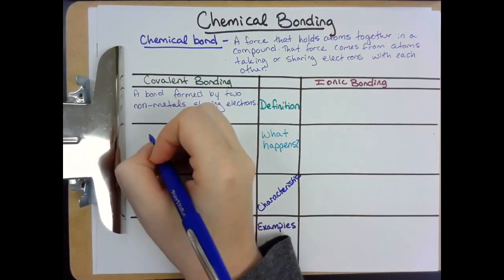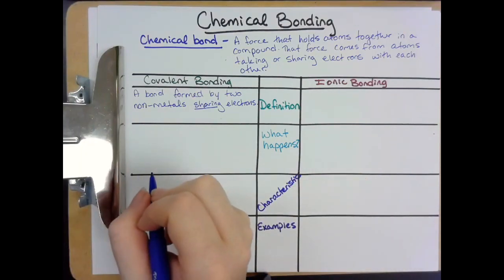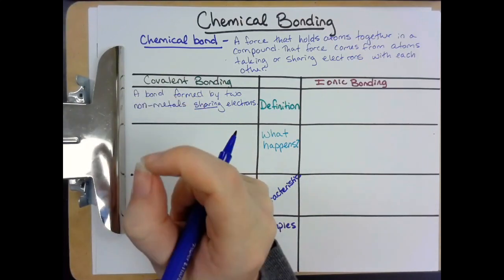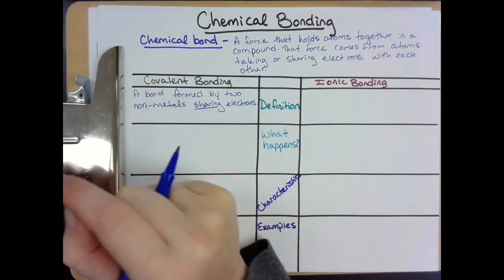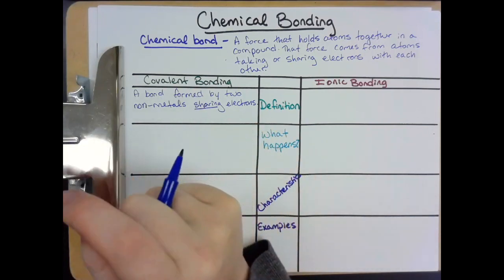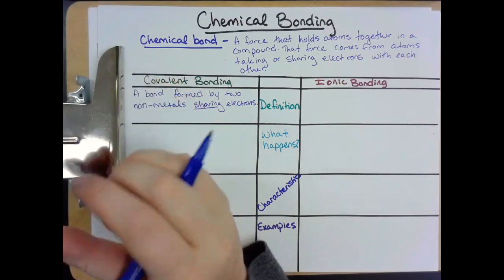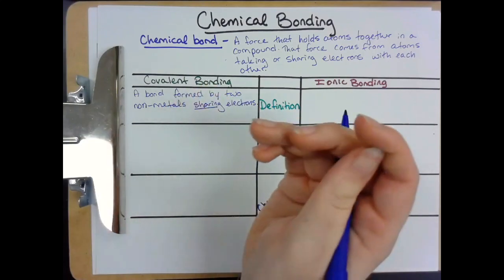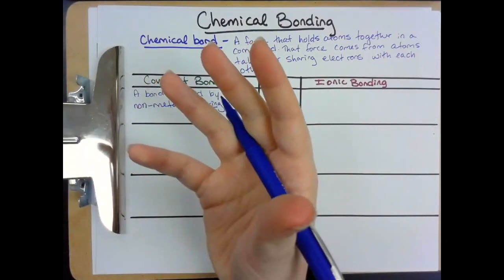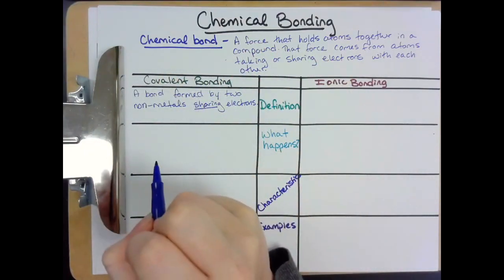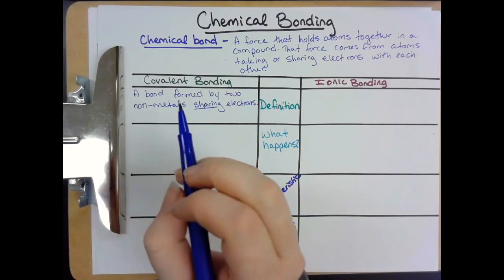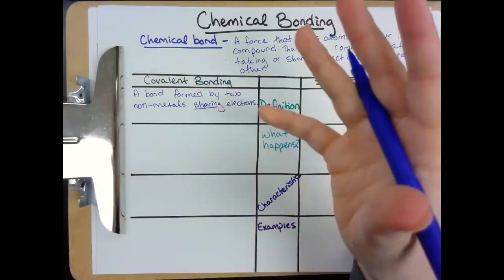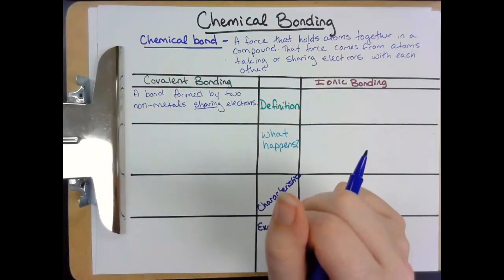A covalent bond happens because atoms are trying to fill their valence shells. Those valence shells are most stable — atoms are at their happiest when they have eight valence electrons. But only the noble gases naturally have eight valence electrons. So other atoms can get to eight by sharing electrons or by taking electrons. A covalent bond happens when atoms try to fill their valence shells by sharing electrons so they can have enough.